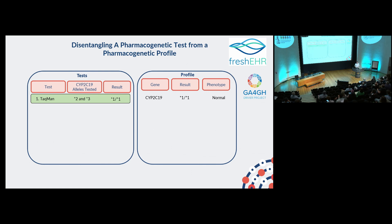For whatever reason, in a few years' time, they might end up having a panel-based pharmacogenetic test which tests for far more variants. The Agena assay, for example, tests for a large number of variants in CYP2C19. Some have higher levels of evidence than others. This may find that they actually carry a star 4 variant. Based on the way we have separated testing standardization from the profile, your profile gets updated and this individual becomes an intermediate metabolizer.